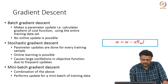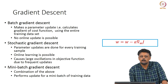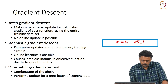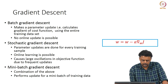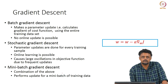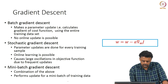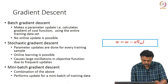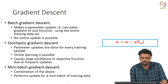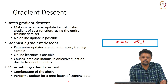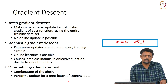The other extreme is stochastic gradient descent, where you update the parameter for every individual training data point. Online learning is possible here because you can update your parameters as soon as a new data point arrives. But this method causes large oscillations in your objective function as well as your parameter updates. To get the best of both worlds, mini-batch gradient descent takes subsets of your training data, calculates the average gradient, and uses that to update the parameters.